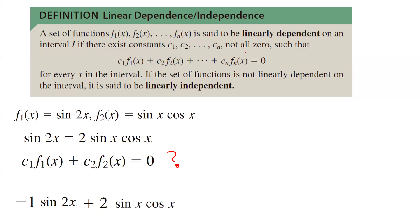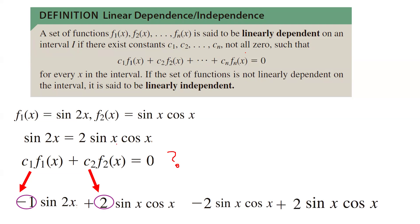Why is that? Because negative 1 times sine 2x — sine 2x is 2 sine x cosine x — so you can write it as negative 1 times 2, which is negative 2, sine x times cosine x, plus 2 times the second function, which is sine x cosine x. They are opposite of each other, so they disappear and it equals 0. So you found non-zero ci values that make the linear combination equal to 0. These two functions are linearly dependent.